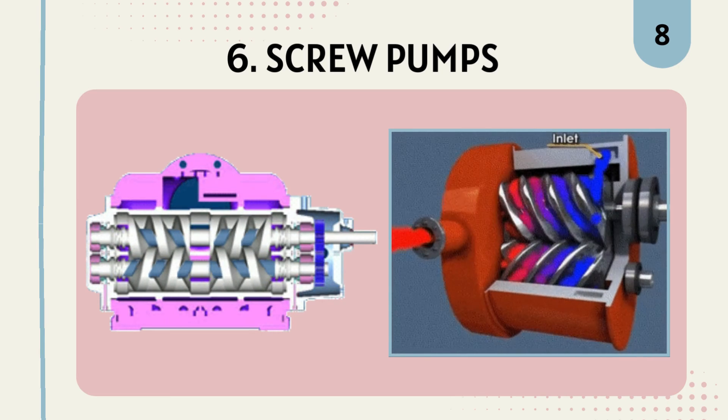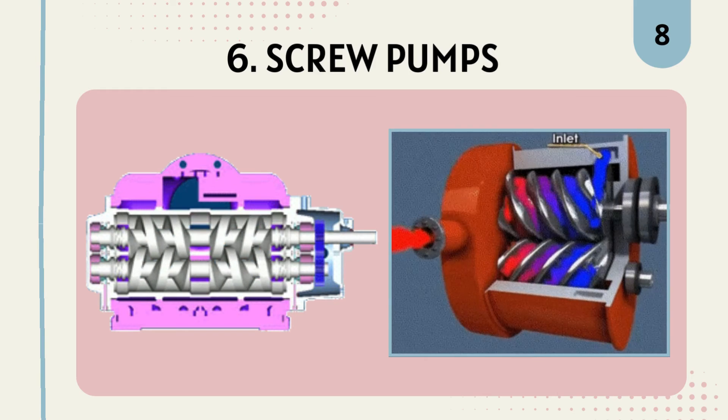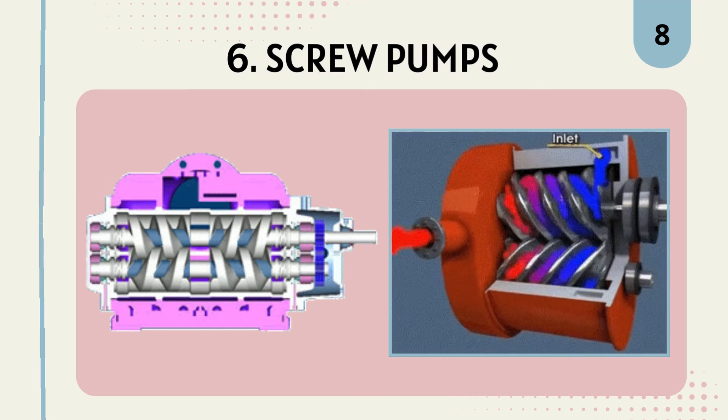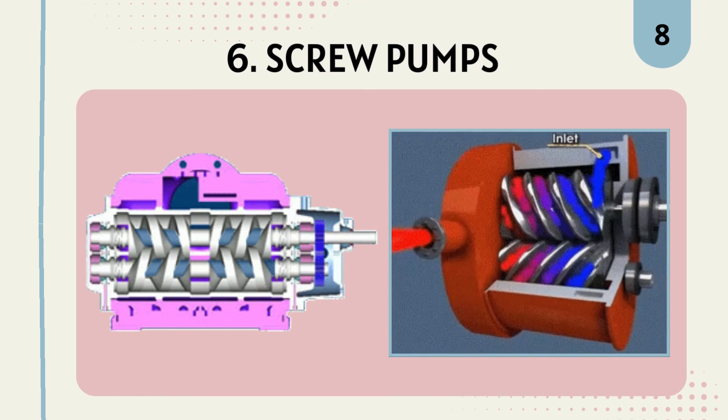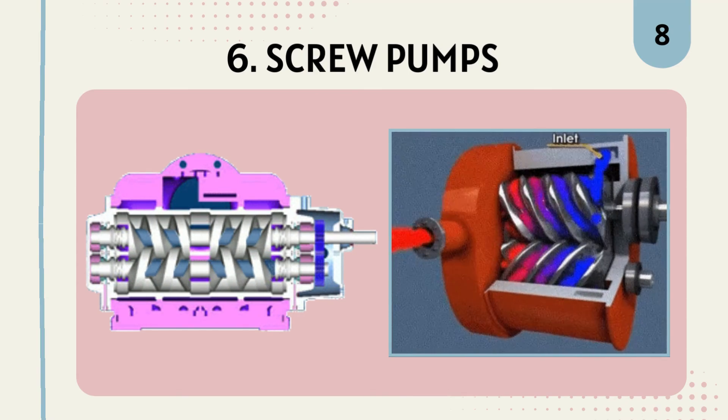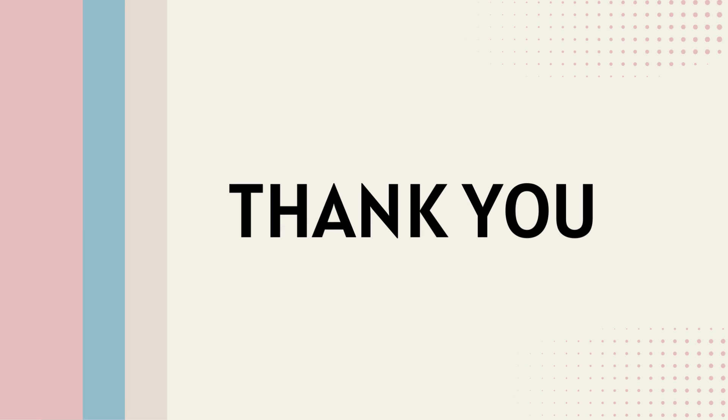These are just a few examples of the types of pumps used in chemical industries. The choice of pump depends on factors such as the type of fluid being pumped, flow rate, pressure requirements, and specific operational needs. In upcoming videos, we will individually cover each type of pump — discussing operation, working, construction, advantages, disadvantages, and applications in detail. Please stay tuned for those videos.